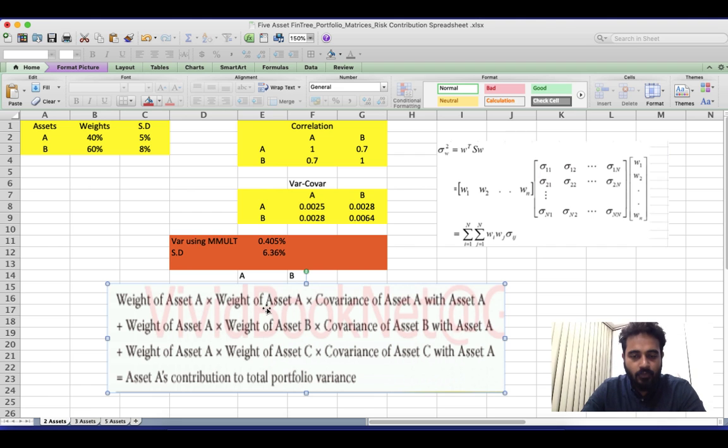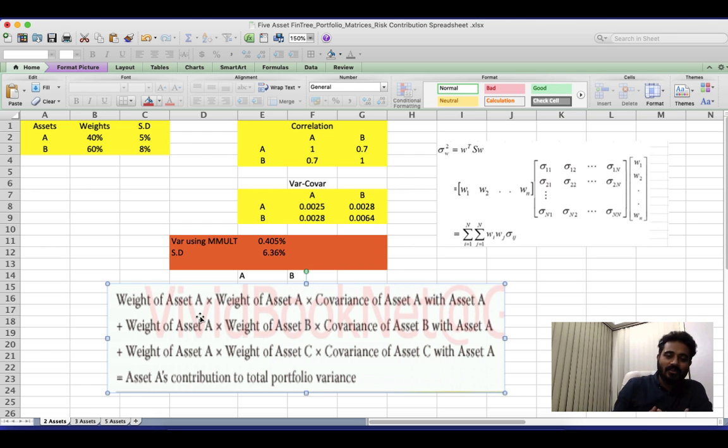So now to calculate risk contribution, the formula you have to use is weight of A into weight of A into covariance of A with A, then weight of A into weight of B into covariance of A with B. Now observe the term. I can always take the weight of A common and keep it outside, but I'm not going to do that. Because it's Excel, so we don't have to worry so much. So just take those weights, multiply with covariance, add them up, job done.